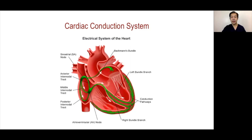The AV node's vascular supply mainly comes from the right coronary artery in around 80 to 85 percent of cases. So it is not unusual to see that patients with inferior infarction involving the right coronary artery may present with some degree of atrioventricular block.